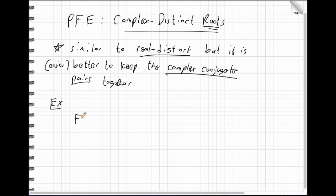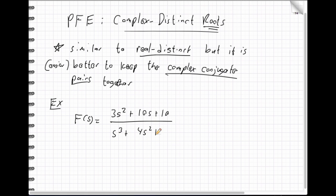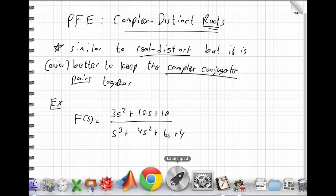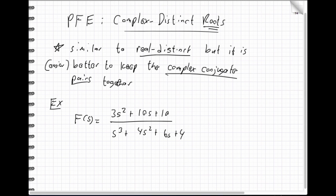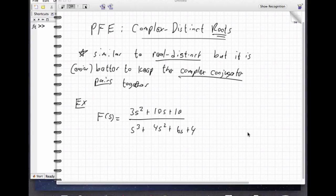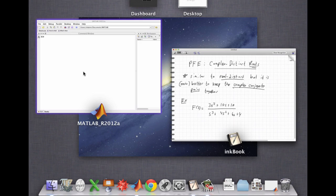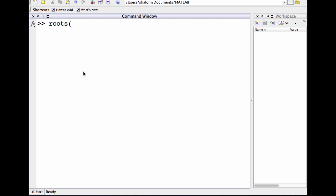Here's our example. We have some Laplace transform — I'm not going to delve into the physical system I derived it from, but it came from a differential equation and an input. Let me go ahead and open MATLAB. MATLAB is ready. So what's my denominator? 1, 4, 6, 4. Let's look at the roots of that.